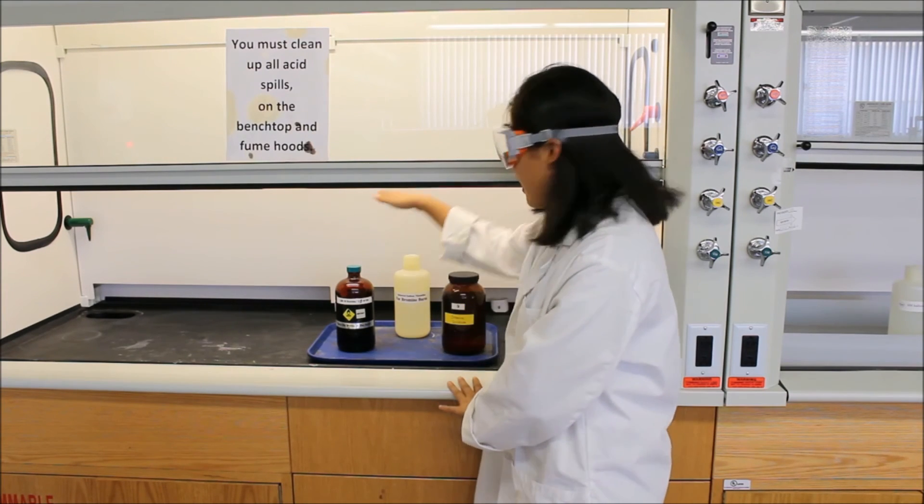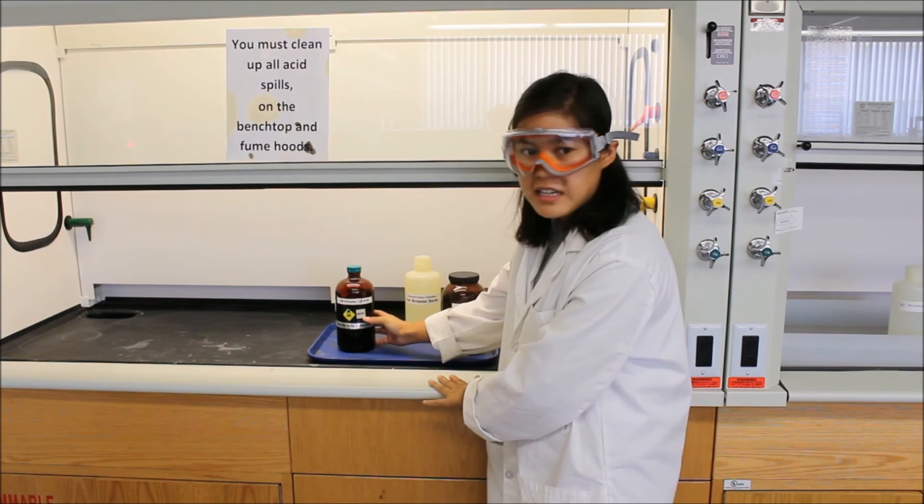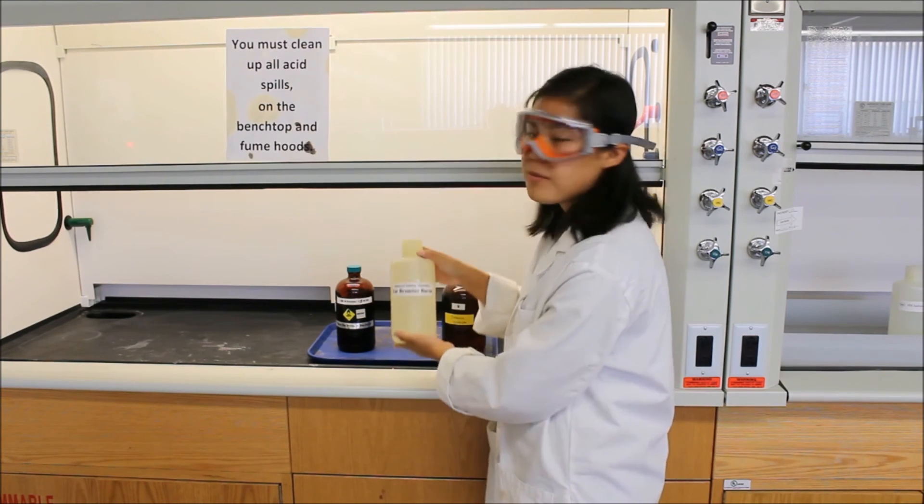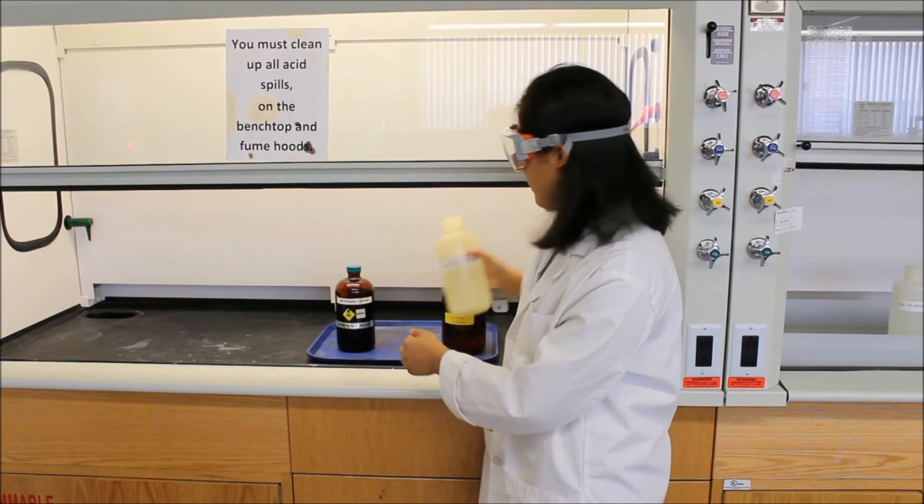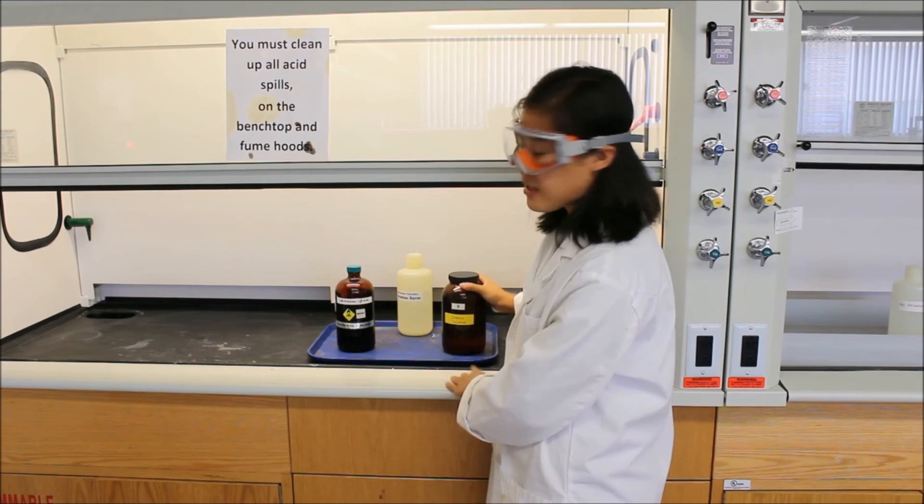So if you spill any of the bromine on yourself, remember it's an irritant and it's a strong oxidizer. So you're going to want to pour some of this sodium thiosulfate solution on where you were burnt and then rinse it off in the sink like anything else that you spill on yourself.